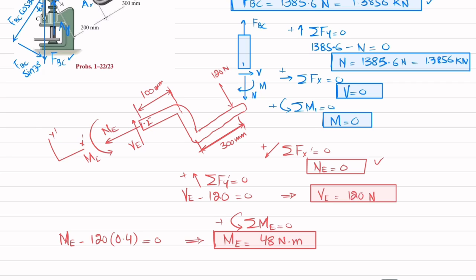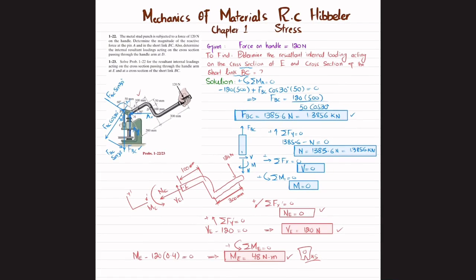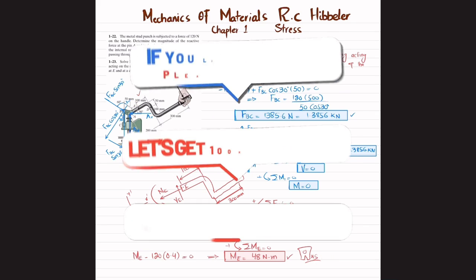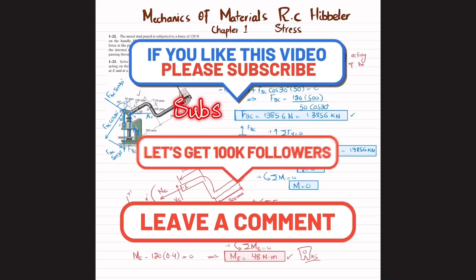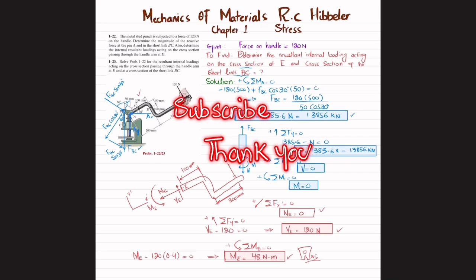So NE, VE, and ME are the resultant internal loadings at point E. To summarize problem 1-23: for short link BC, normal force N equals 1385.6 N, shear force V equals zero, and moment M equals zero. At cross-section E on the handle, NE equals zero, shear force VE equals 120 N, and moment ME equals 48 N·m. Thank you for watching — subscribe and press the bell icon for notifications, and ask any questions in the comments section.